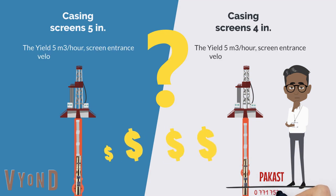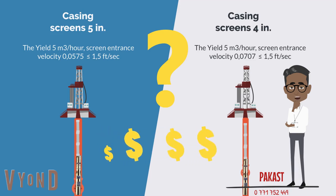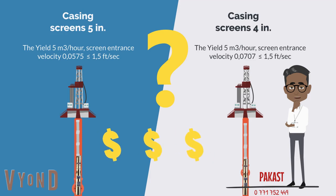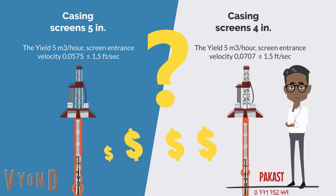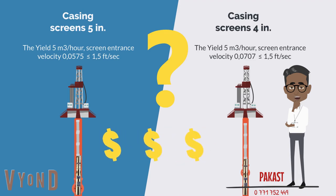The most important parameters on which the cost of a borehole depends are its length and diameter. Justification of the minimum diameter of the casing screens, which ensures the design selection and the allowable reduction, allows to reduce the cost of the well. Taking into account the fact that modern borehole pumps provide a wide range of capacities and pressures at a small outer diameter, the cost of a borehole pump will also depend on the type of pump, the capacity and the diameter, and an increase in diameter will lead to a price increase.